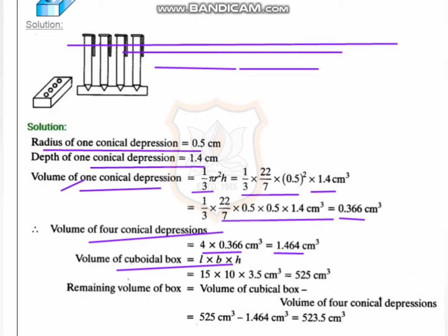The volume of 4 conical depressions equals 4 × 0.366 = 1.464 cm³. The volume of the cuboid equals l × b × h = 15 × 10 × 3.5 = 525 cm³. The remaining volume of the box equals the volume of the cuboid minus the volume of the 4 conical depressions: 525 − 1.464 = 523.5 cm³.